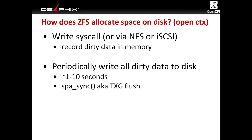So how does ZFS do this at all? In the beginning was the write system call. Applications issue write system calls to make changes to the file system — the same kind of thing can come in over NFS or iSCSI. In what we call open context in ZFS, all we're doing is copying the data we need to write into memory. We're talking about asynchronous writes here; synchronous writes have some more going on that I'll ignore for this talk, but it works similarly.